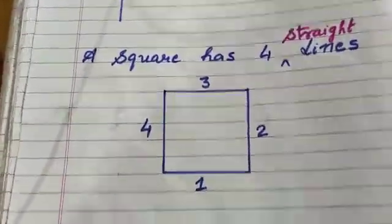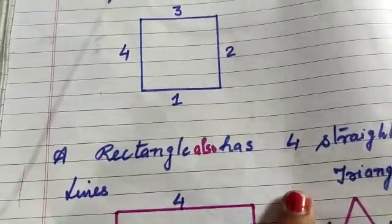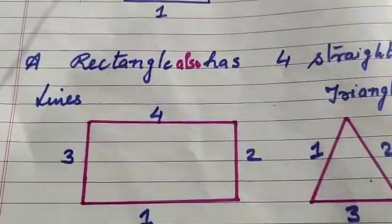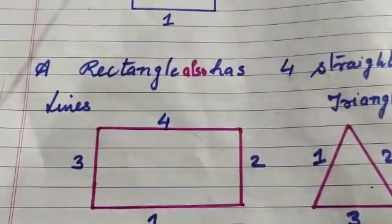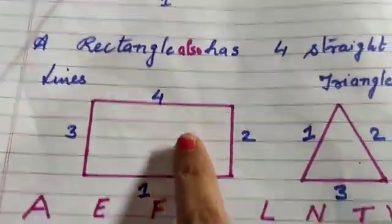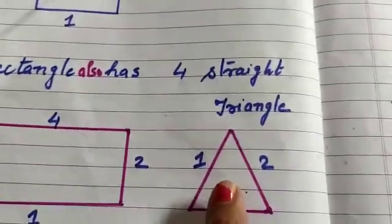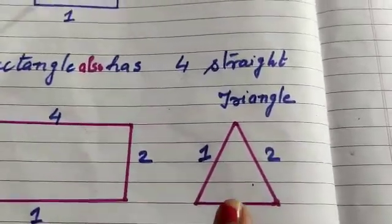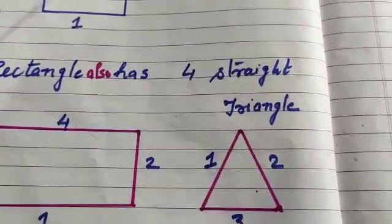A rectangle also has four straight lines — one, two, three, four. Four straight lines. A triangle is also having three straight lines — one, two, three.